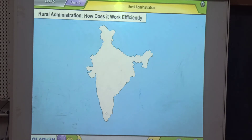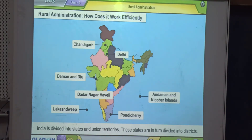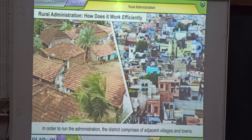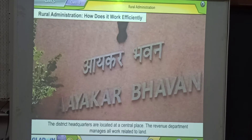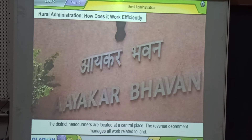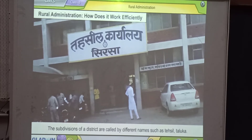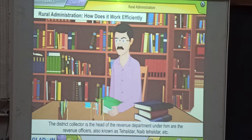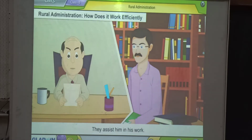Rural Administration. India is divided into states and union territories. These states are in turn divided into districts. In order to run the administration, each district comprises adjacent villages and towns. The district headquarters are located at a central place. The revenue department manages all work related to land. The subdivisions of a district are called by different names such as Tehseel and Tauka. The district collector is the head of the revenue department, assisted by revenue officers also known as Tehseeldar and Naib Tehseeldar.